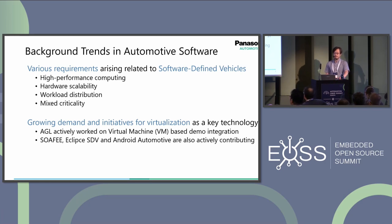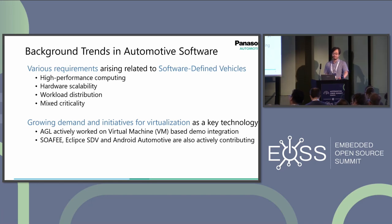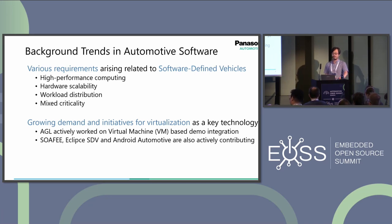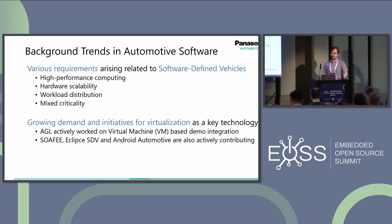Let's take a look at some background trends in automotive software. In recent years, there are various requirements arising related to software-defined vehicles such as high-performance computing, hardware scalability, workload distribution, mixed criticality, and many more. In response to these needs, there has been growing demand and initiatives for virtualization as a key technology. For example, the AGL project has been actively working on virtual machine-based demo integration using KVM. Other projects such as SOFI, Eclipse SDV, and Android Automotive are also actively contributing virtualization solutions for automotive use cases.